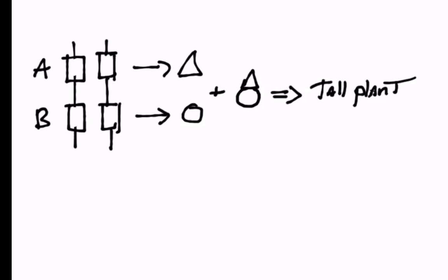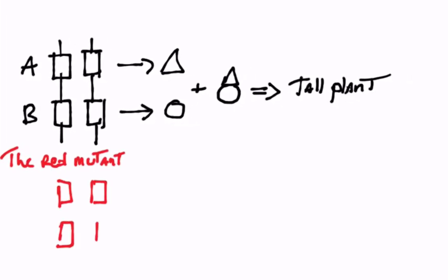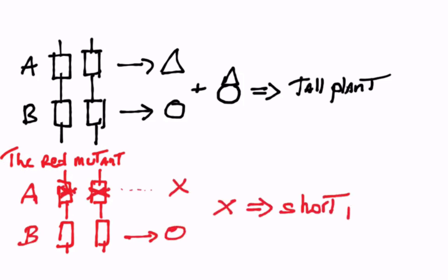A mutant called red has a lesion in the A gene, which can no longer make the triangle protein. The protein complex is not formed and the plant is short.